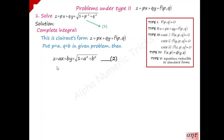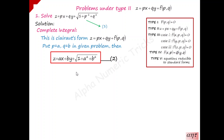Substituting: p is replaced by a and q is replaced by b, giving z = ax + by + √(1 + a² + b²). Here you have two arbitrary constants and two independent variables, which is why this is the complete integral for Clairaut's form type problems — equation 2.